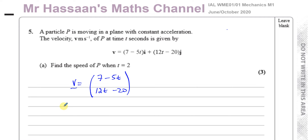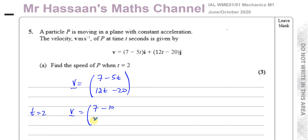When t equals 2, we just have to replace t with 2 inside this vector. So we have 7 minus 5 times 2, which is 10, and we have 12 times 2 which is 24, minus 20, which leaves us with minus 3 and 4.